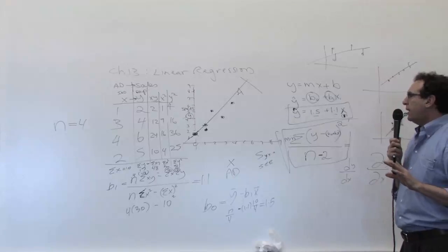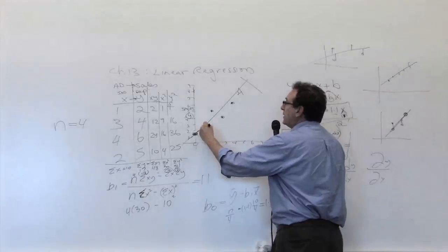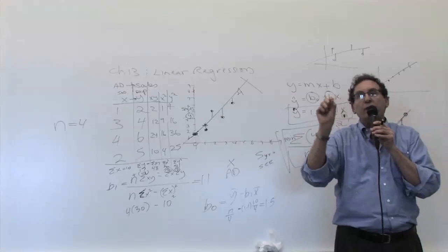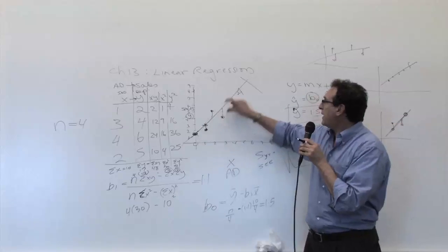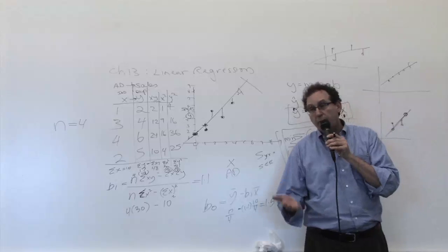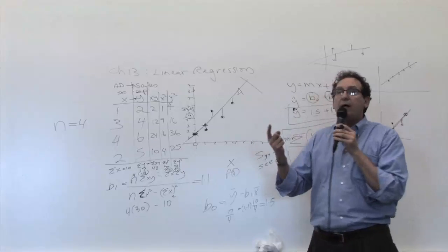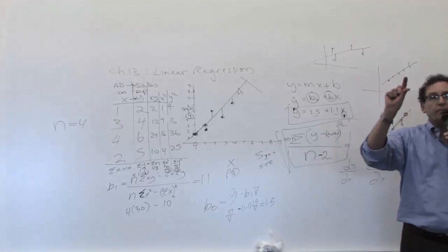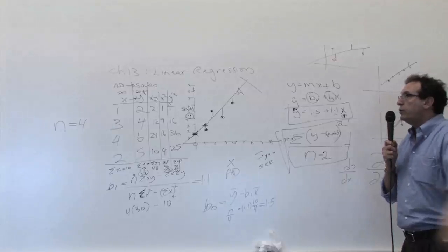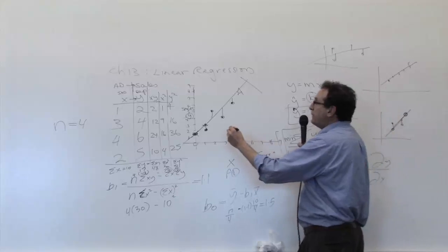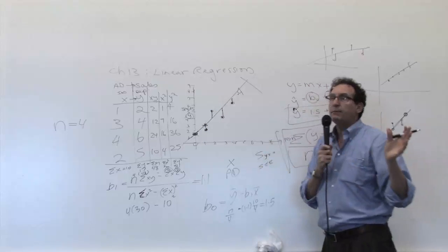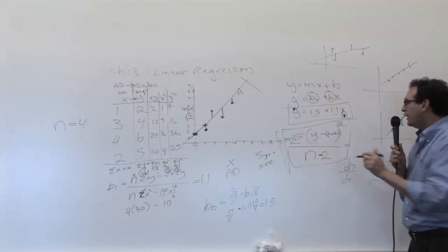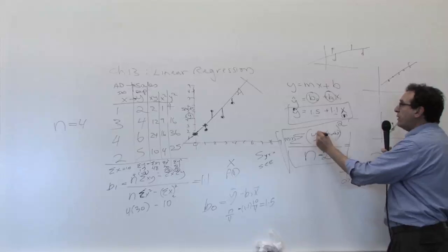We'll talk about the standard error of the estimate again on Wednesday. I want you to calculate how close the dots are to the straight line. If you had to pick a number — are they 3,000 away, 0.001 away? It can't be negative. How close are these dots to the straight line on average? One turns out to be the actual answer when we plug it into the formula. They're about one away. So for homework, after you've plotted the data and drawn the straight line, estimate how close the dots are to the straight line.